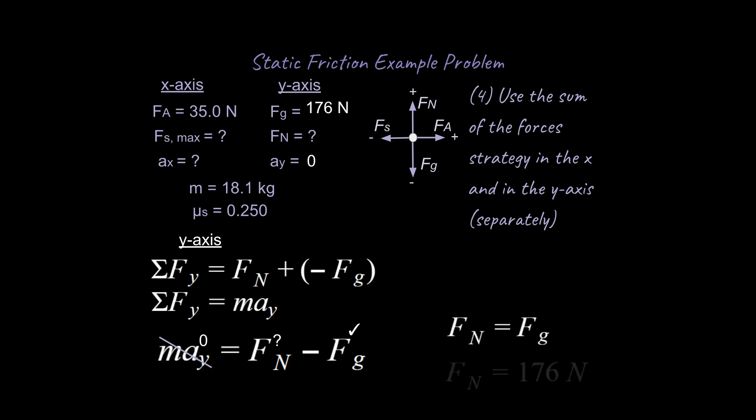So we're going to go ahead and simplify the equation. We know fn is equal to fg in terms of magnitude, not in terms of direction, but our fn value turns out to be 176 newtons. So we're going to update our information in a very logical way so that we can keep track of everything that's going on and be organized so we can just destroy this problem and get it correct.